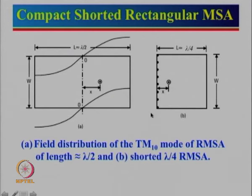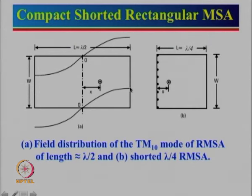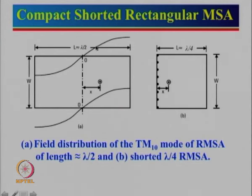We will start with the compact shorted rectangular microstrip antenna. Here is a configuration: a rectangular microstrip antenna. For the fundamental TM10 mode, there will be half-wavelength variation along the length, and 0 means there is no variation along the width. For this mode, if you look at the field distributions, it goes from plus to 0 to minus. Along the central axis the field is equal to 0. Voltage equal to 0 really means this is a short circuit. We can actually replace this entire configuration with a simpler one where the total length L equal to lambda by 2 is now reduced to L equal to approximately lambda by 4, where all these things are shorted.